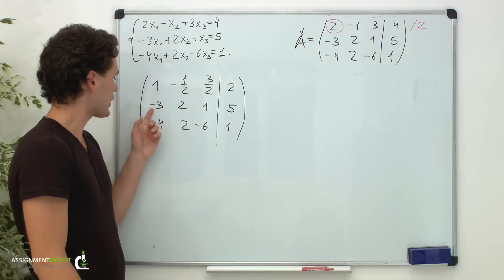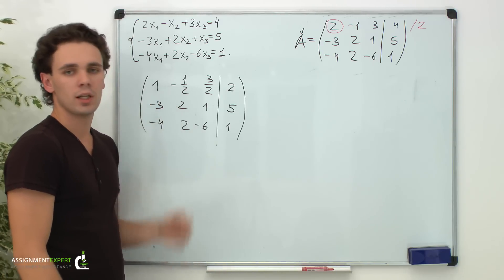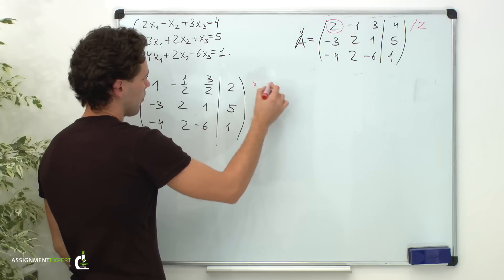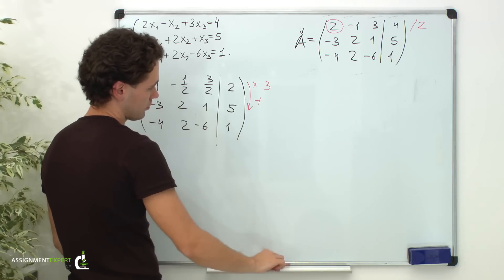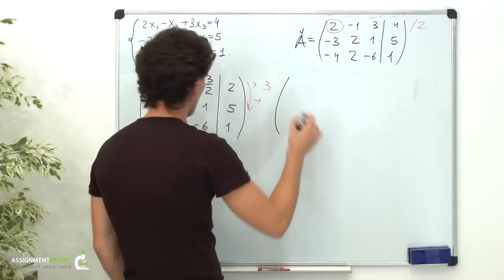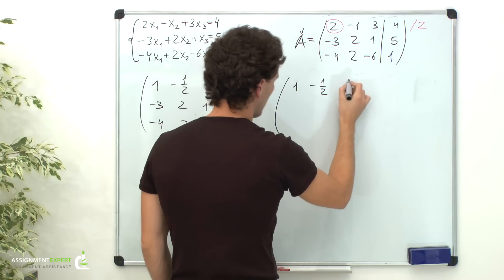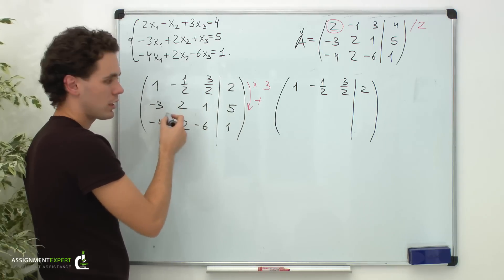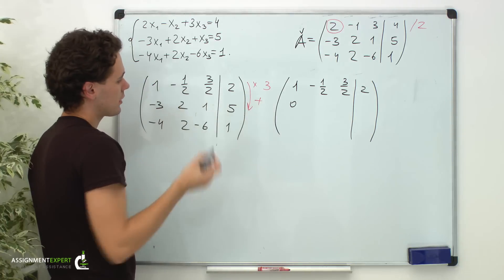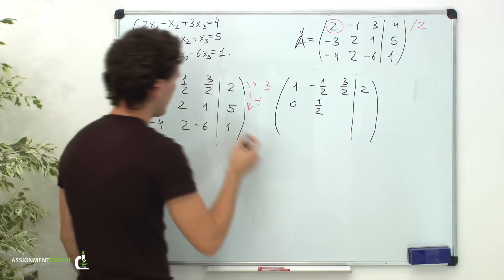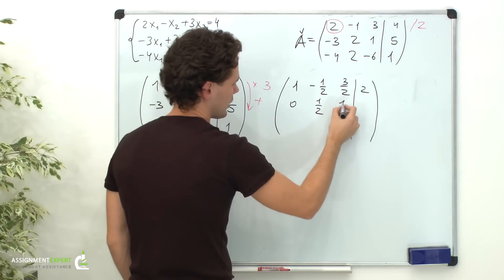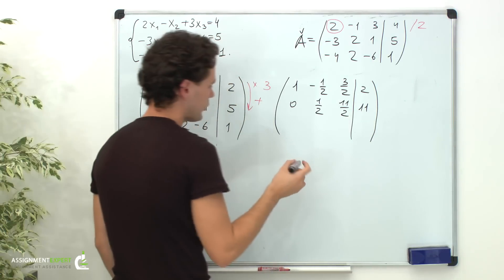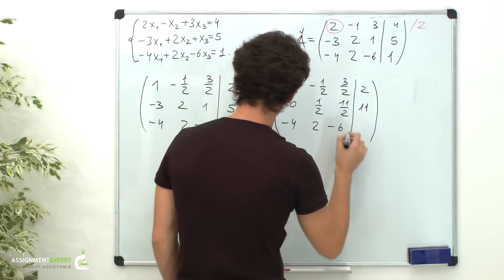Now, we need to eliminate x1 from all the equations except the first one. Let's begin with the second equation. To eliminate x1, we need to multiply the first row by 3 and add it to the second row. First row without changes: 1, negative 1 half, 3 halves, and 2. Now, the second row: 1 times 3 minus 3 gives us 0. Negative 1 half times 3 is negative 3 halves, plus 2 gives us 1 half. 3 halves times 3 is 9 halves, plus 1 equals 11 halves. And 2 times 3 is 6, plus 5 equals 11. And the third row without changes: negative 4, 2, negative 6 and 1.